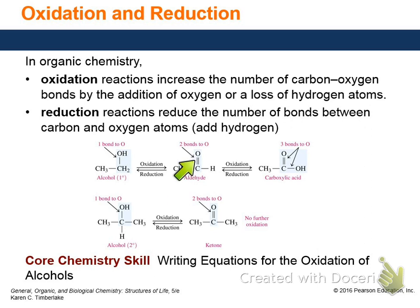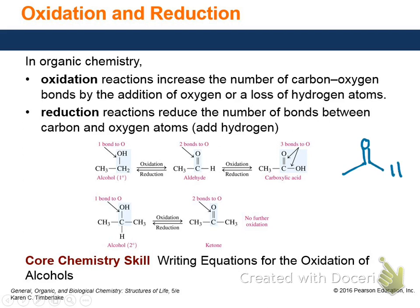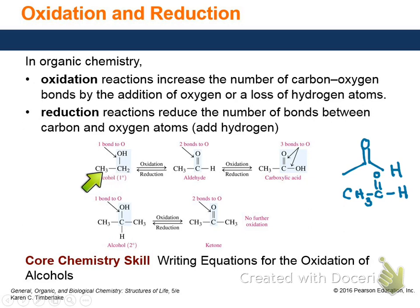If you take a primary alcohol — the OH group attached to a carbon with only one carbon on it — and oxidize it, you get an aldehyde. Oxidize it again and you get a carboxylic acid. Secondary means two carbons are attached to that carbon. Primary alcohol oxidizes to aldehyde, then to carboxylic acid.